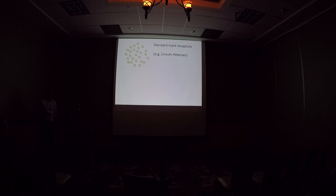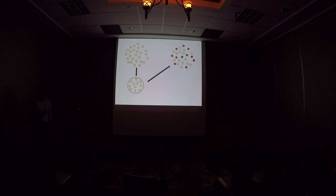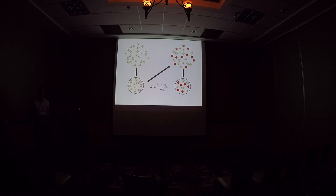This is as basic as it gets — the Lincoln-Peterson model. You've got some population represented by the classic little marbles, and we want to know something about them, usually how many are out there. So we collect a sample, we mark that sample somehow, we throw them back, let them mix up, and then we take another sample. Our proportion of marked individuals in that second sample, versus the size of that sample and the size of the first sample, gives us an estimate of the total number of individuals we were marking.